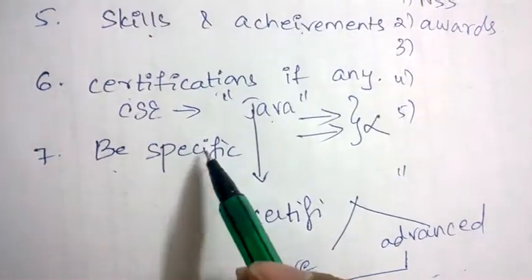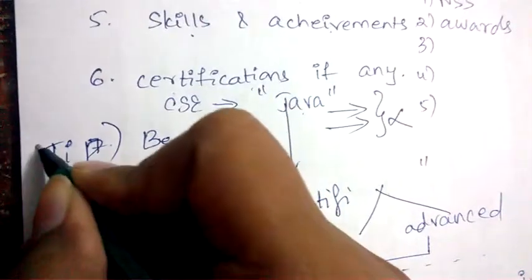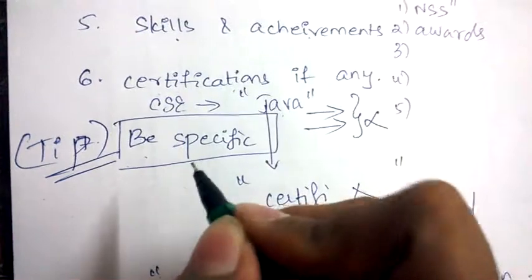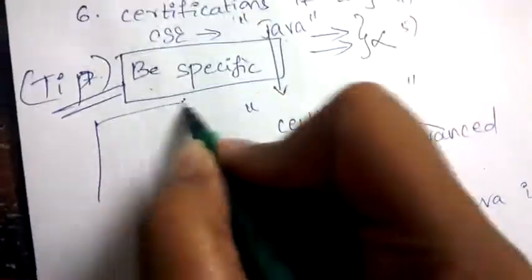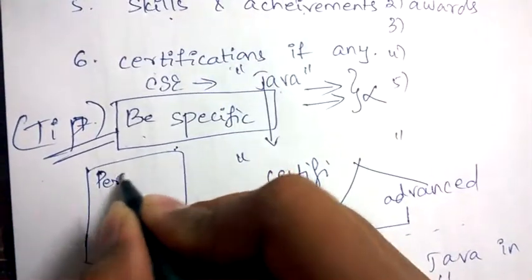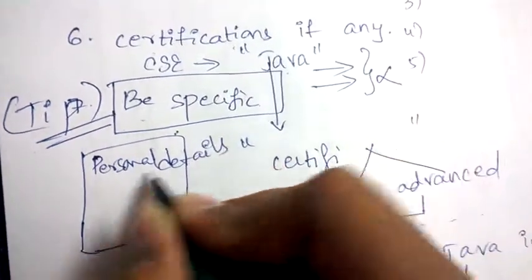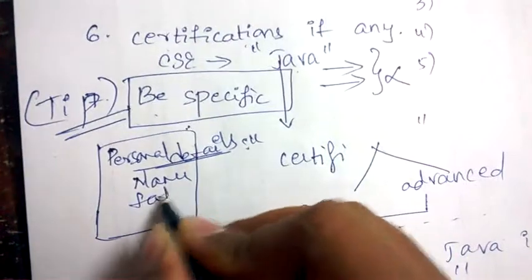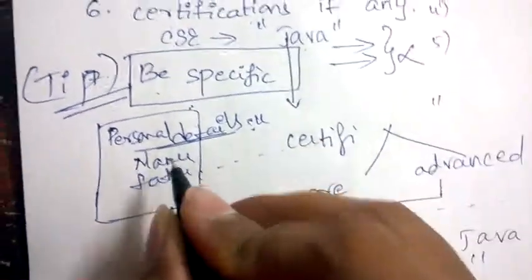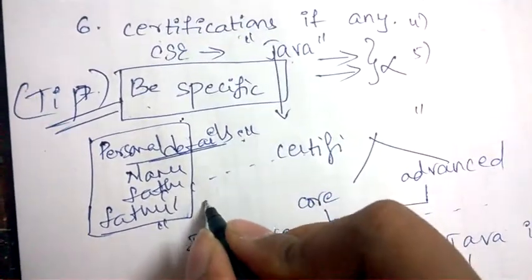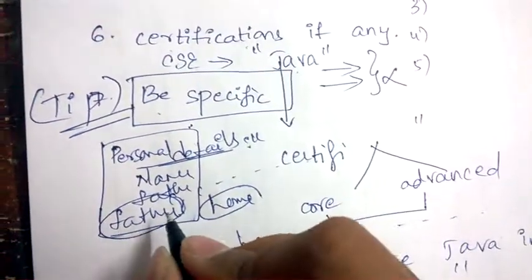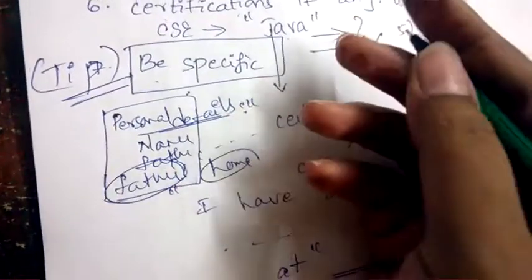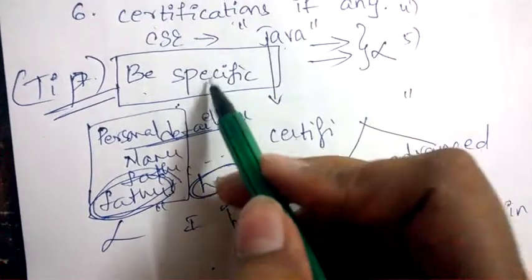An important tip: always be specific. If they ask for personal details, 'personal' means only you — so just mention your own details. Don't go too deep by including your father's job or your hometown, as these are irrelevant. HR has no use for knowing your hometown or your father's occupation. Always be specific and to the point in a resume.